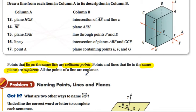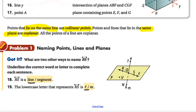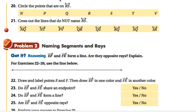Circle the points that are on RS. Well, if you look at line RS, the points on RS are R, Q, and S. So we're going to circle the points that are on RS. Those are only R, Q, and S. So those are the ones that would get circled.